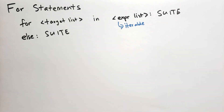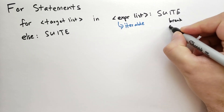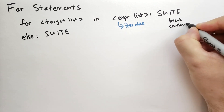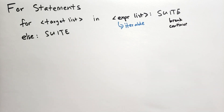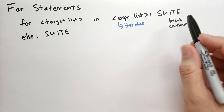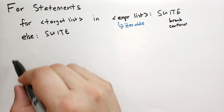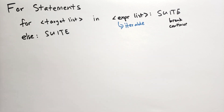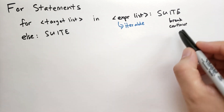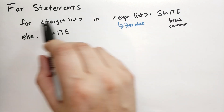Inside the suite you can use break and continue, which have a very similar meaning to in the while loop. If you break in a for suite, it will immediately exit the loop and continue with the code after the else block — it will skip the else block. If you execute continue, it will go back to the beginning and start with the next item in the iterator.